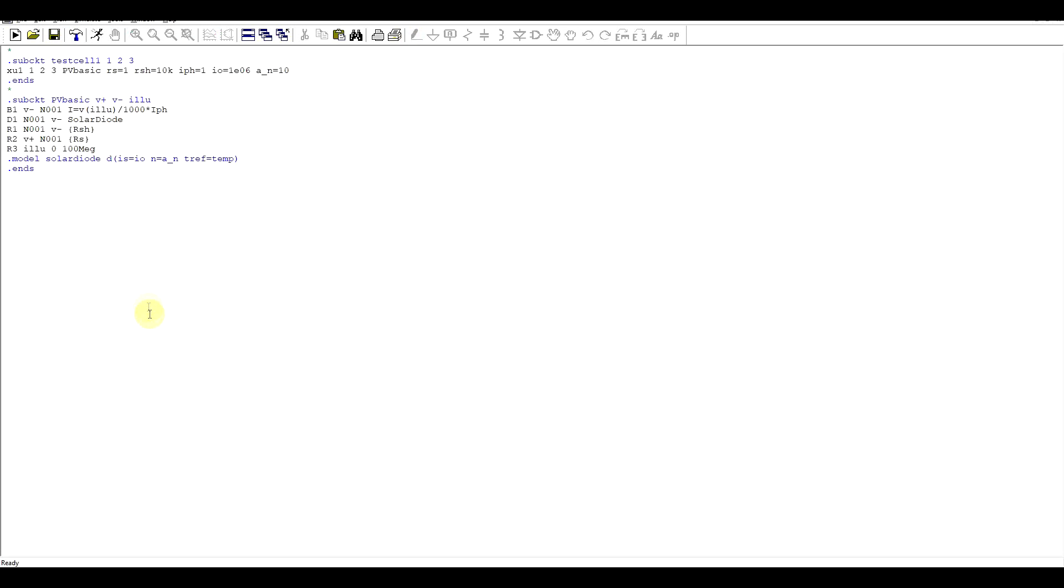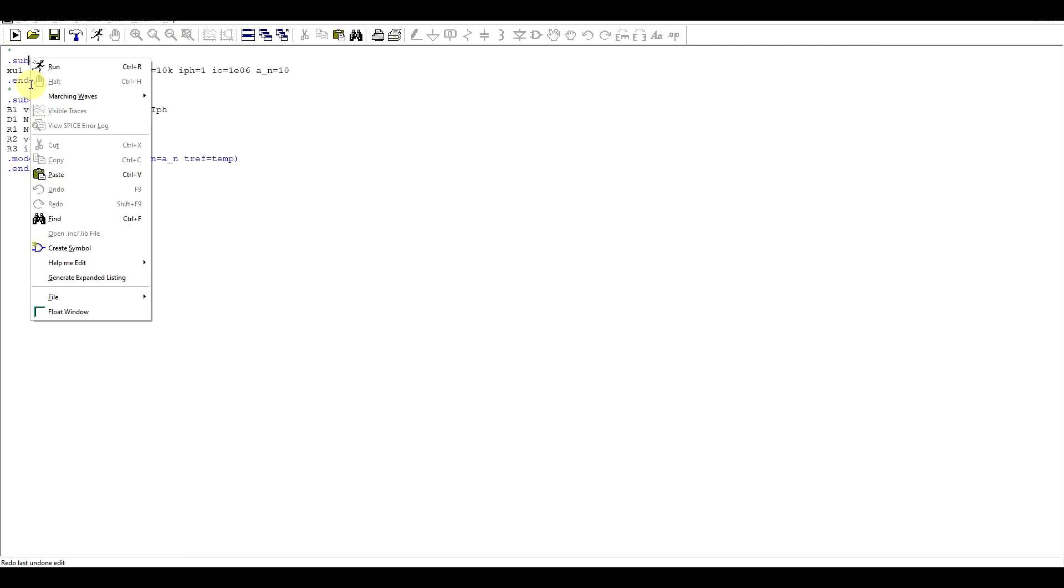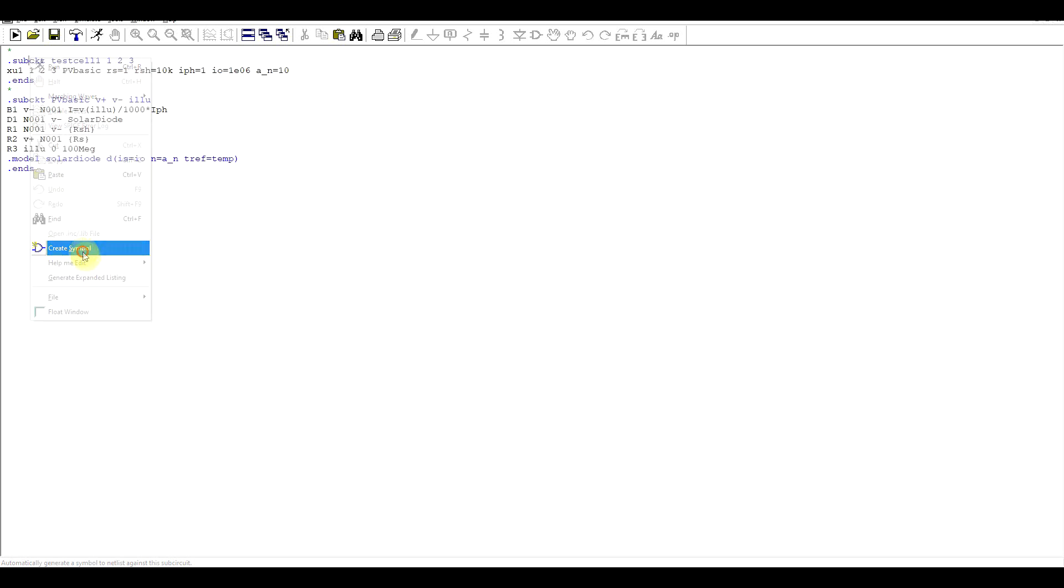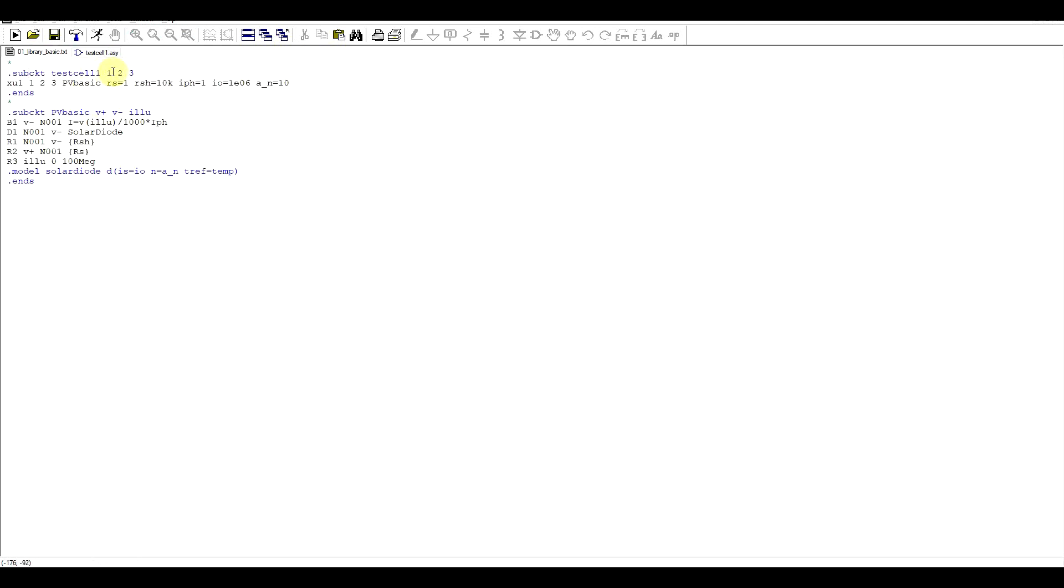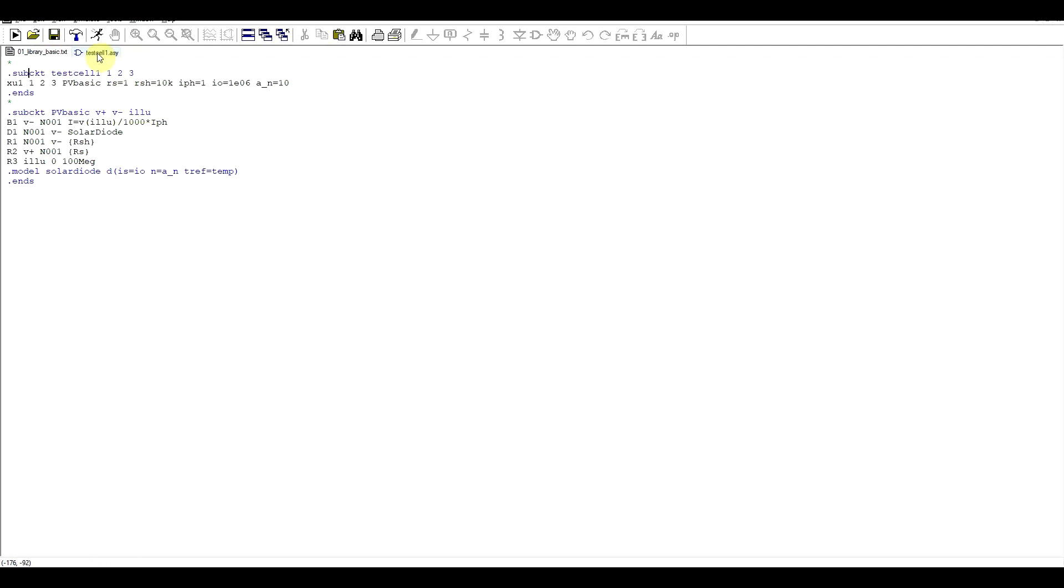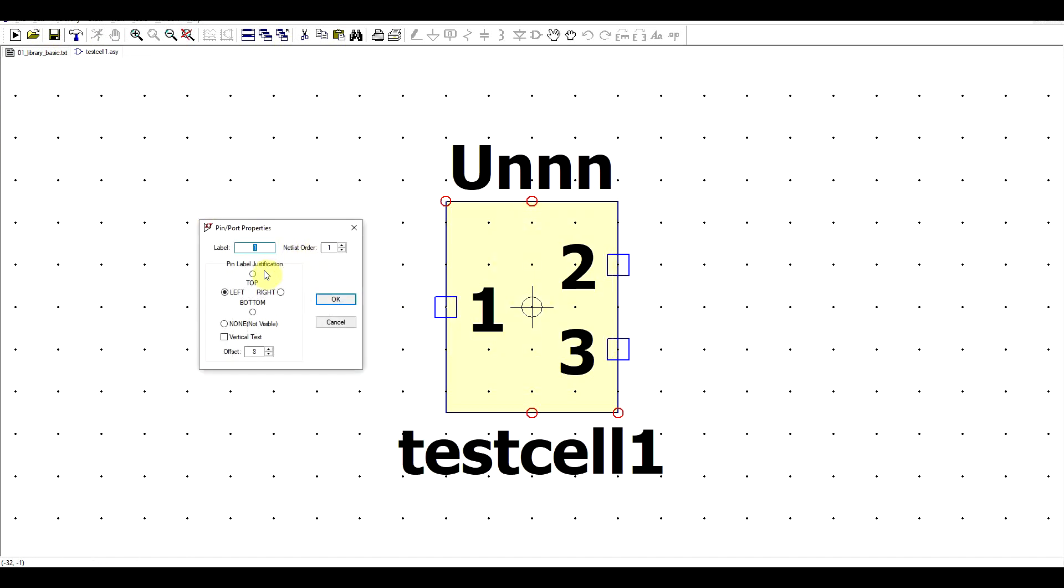Next we can open this file using LTSpice and on the subcircuit line simply right click and create a symbol. We could create a proper symbol make it look all nice but just to keep things simple I will be using an auto generated symbol and just attributing the various names to it. We know from the library file that pin 1 is the V plus, pin 2 is V minus and then pin 3 is the illumination line. So you can simply change the properties of the various pins, rearrange things just to make them look a bit nicer.